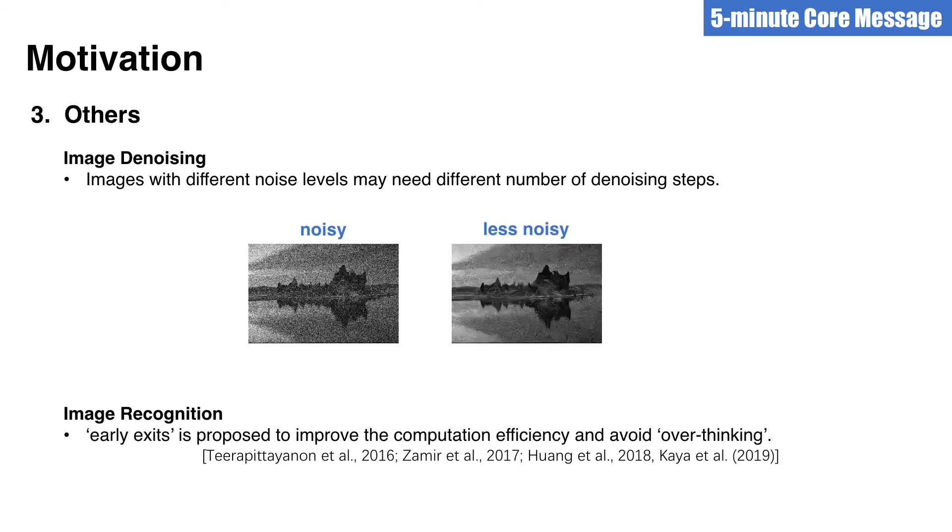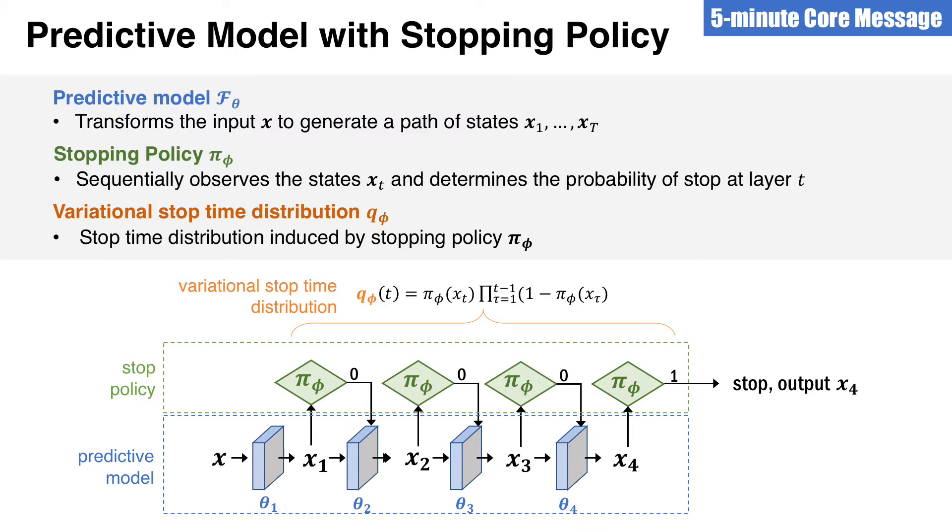There are some other motivations. For example, in image denoising task, it is expected that images with different noise levels may need different number of denoising steps to obtain a clean image. In the image recognition task, early exit is proposed either to improve the computational efficiency or to avoid overthinking.